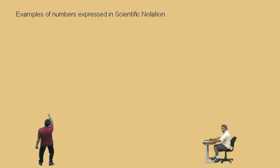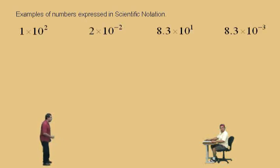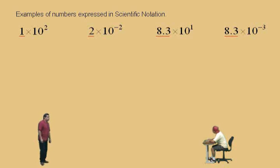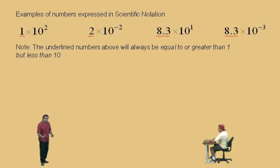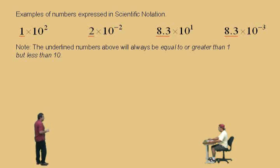Hey Charlie, you ready to go? Okay, we're doing scientific notation, so here we go. Here are some examples of numbers expressed in scientific notation: one times ten squared, two times ten to the negative two. Notice the underlying numbers — they meet the condition for scientific notation for this course. The numbers will always be equal to or greater than one, and less than ten, so those numbers meet the criteria.